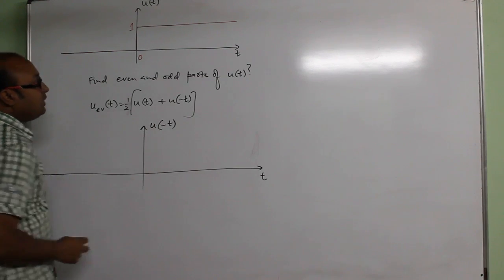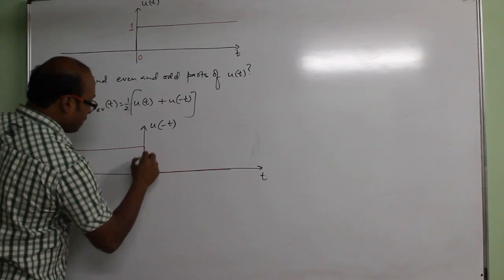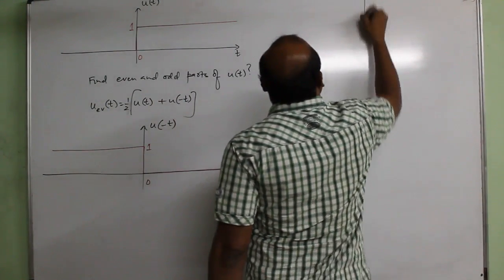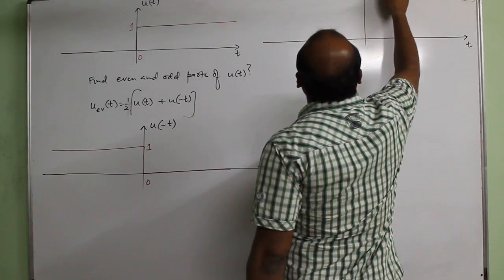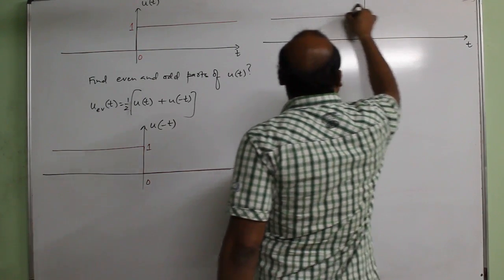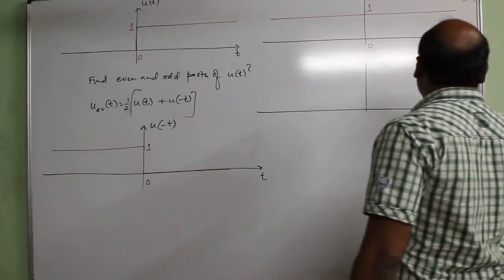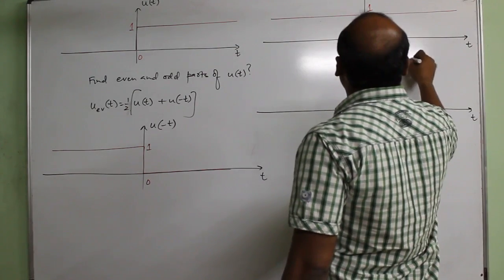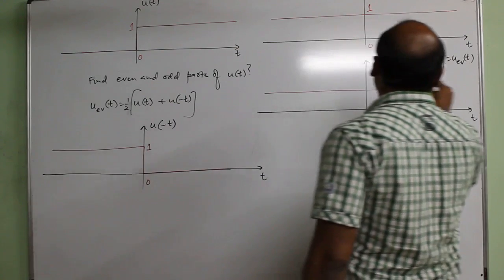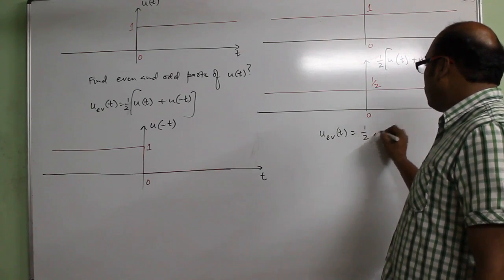u(-t) added to u(t) gives u(t) plus u(-t). This equals 1 over all time. So the even part of the unit step signal is half of u(t) plus u(-t). This is the even part of u(t) and it is basically 1/2 for all time. So we can write the even part of u(t) as 1/2 for all time.